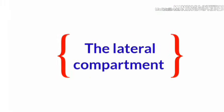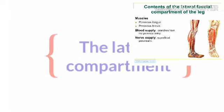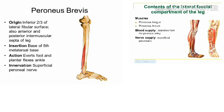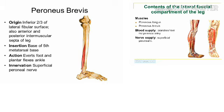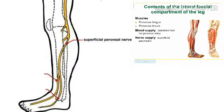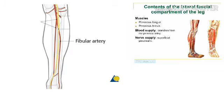The lateral compartment contains fibularis longus and fibularis brevis, also known as peroneal longus and peroneal brevis. The neurovascular structures that supply this compartment are the superficial fibular (peroneal) nerve and the fibular artery.